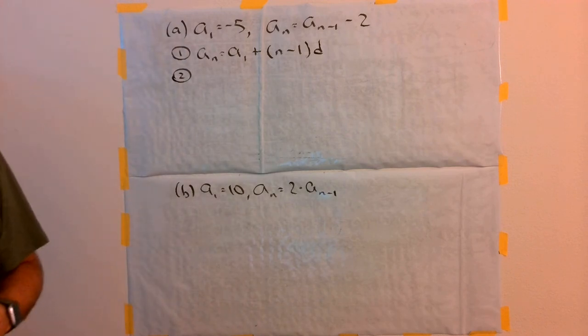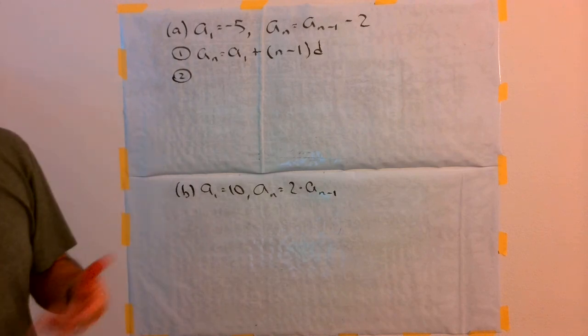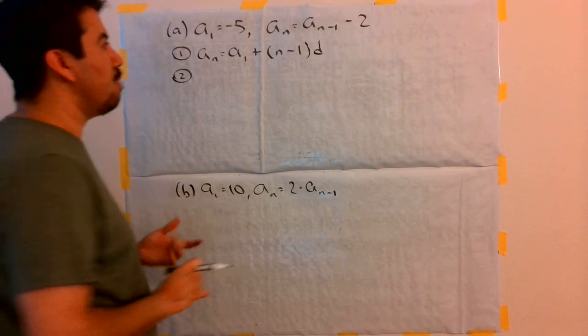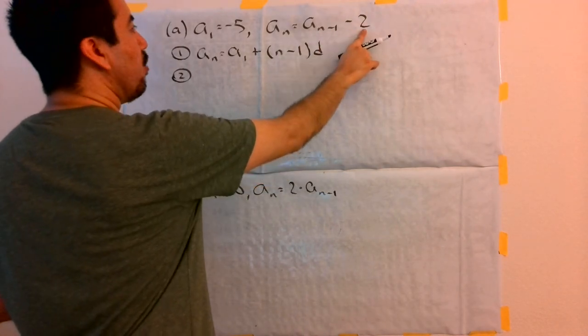Hopefully that comes a little quicker to you, since we've done some of these problems. Now, step 2 says, answer one or the other, whichever applies. And letter a says, is there a number being added or subtracted to a of n minus 1? In this case, yes.